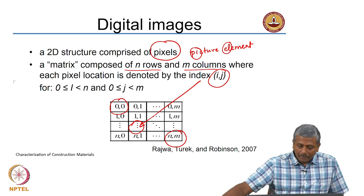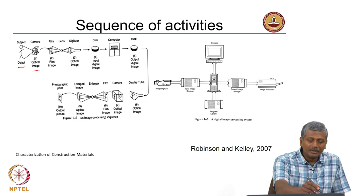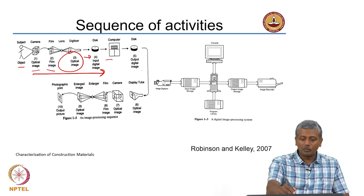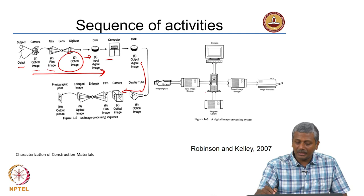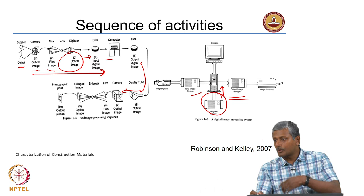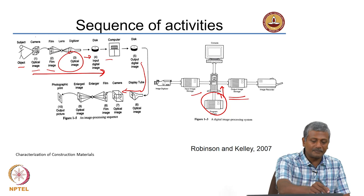Recounting the sequence of activities: you have the object captured using a camera, producing an optical image. The image is transformed into a film, goes through a digitizer to disc and to the computer. Of course all these steps are now single — you can directly take a digital image of the object. The image processing system takes the input image, applies a program library of operations, and produces an output image that is a processed and analysed version. All these multiple steps have been simplified through the use of digital sources of photography.